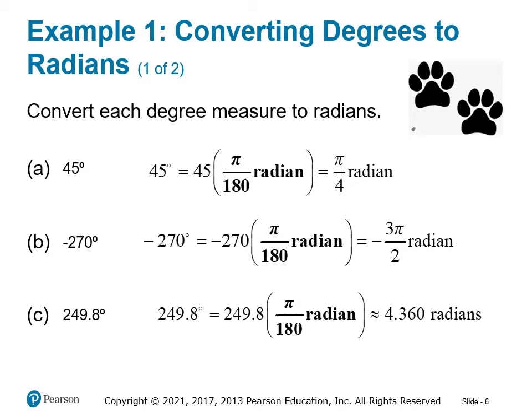For the decimal example, we use the pi button on our calculator. It's 249.8 times pi over 180, and we get approximately 4.360 radians. Notice that the first two answers, A and B, have an equal sign because these are exact measures. Whenever we get into decimals, we have an approximation because we're rounding at some point. Pi goes on and on, and even our calculator can only go out so many digits, so these are very close estimates but still approximations.